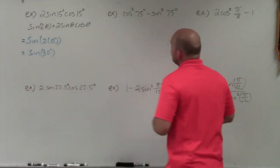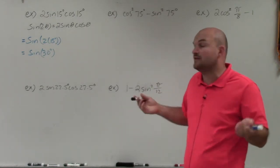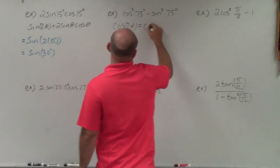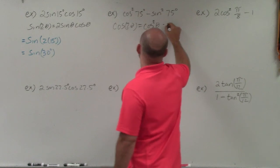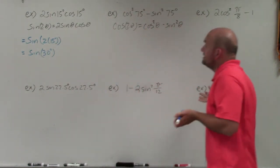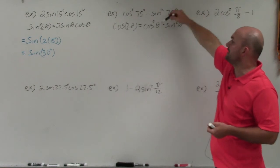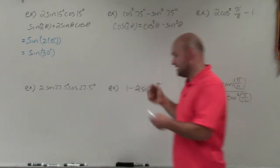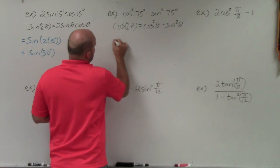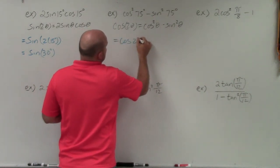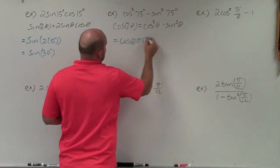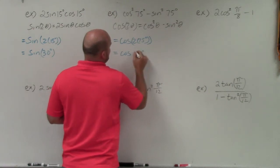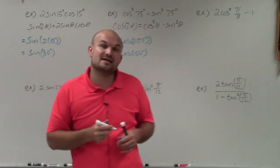For the next one, this follows the double angle formula for cosine: cosine of 2θ equals cosine squared θ minus sine squared θ. In this example, we're replacing theta with 75 degrees. To find the exact value, we plug 75 degrees in for theta, giving us cosine of 2 times 75 degrees, which equals cosine of 150 degrees.